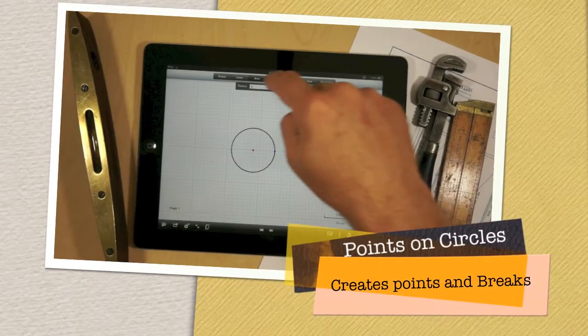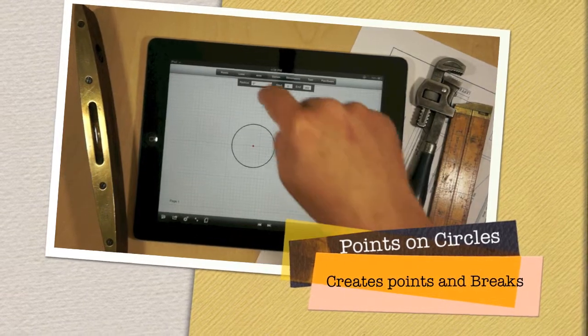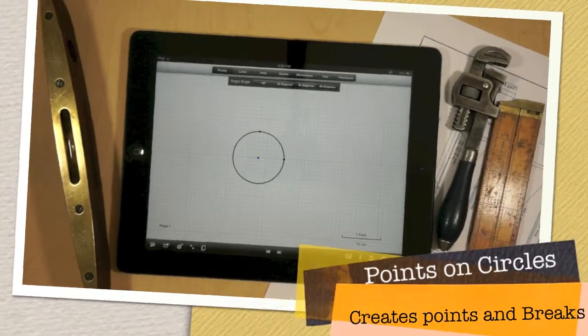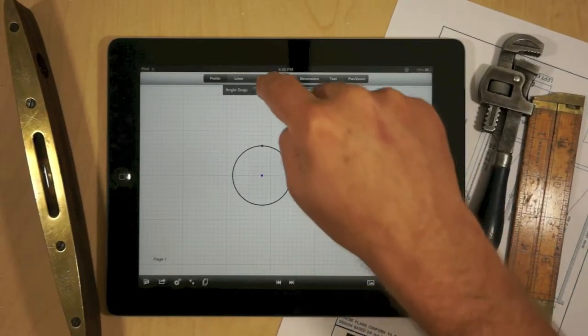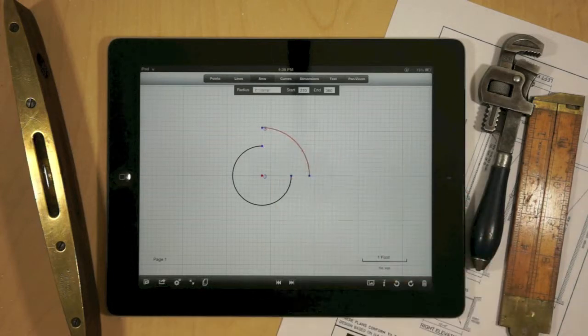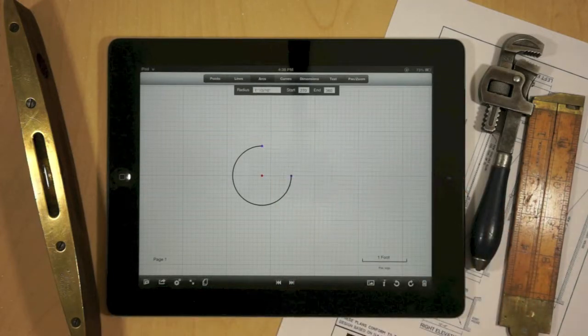Circles are unique in that you can actually create a point on a circle. When you create a point on a circle, it actually also bisects that circle. So if you go into arcs mode and you grab that section, you can actually pull it out. You can also double tap to delete it as well.